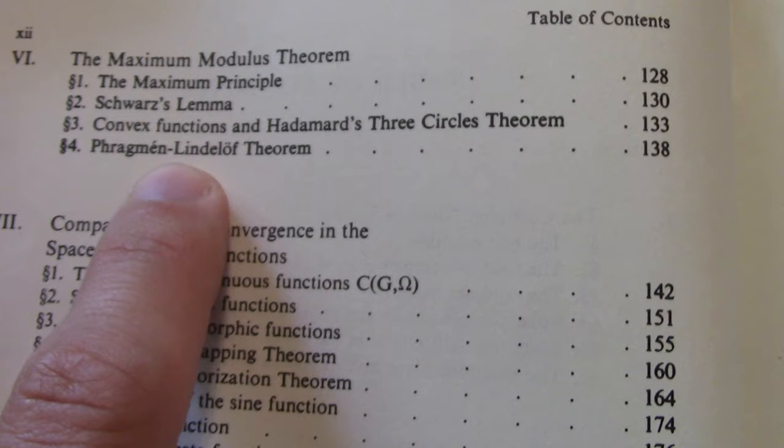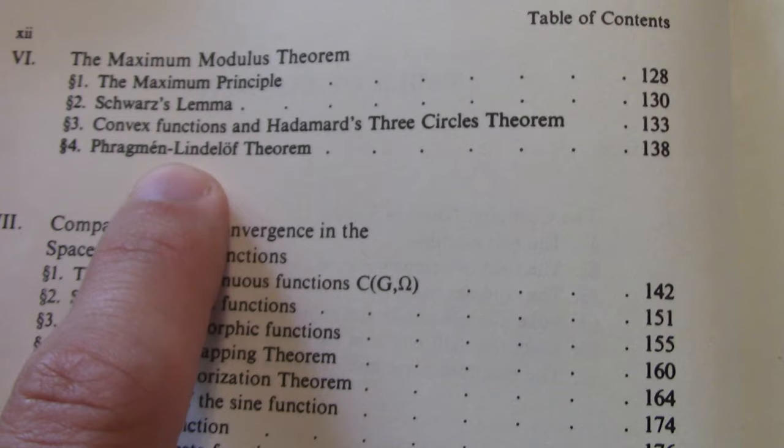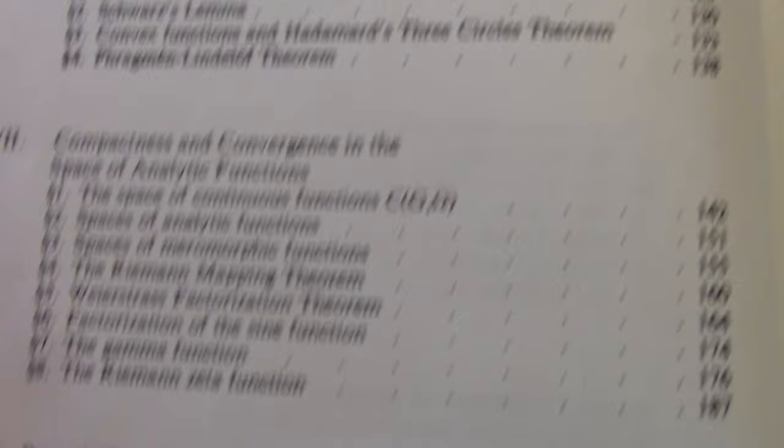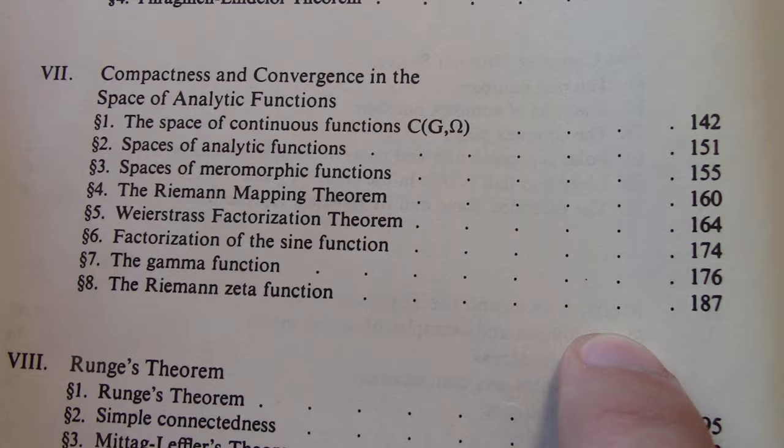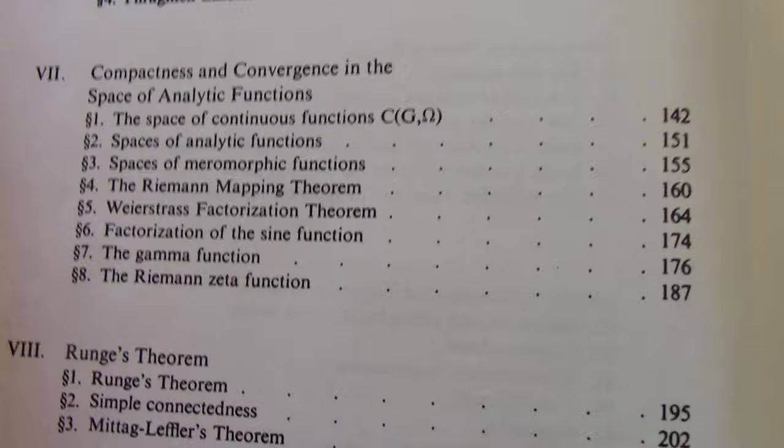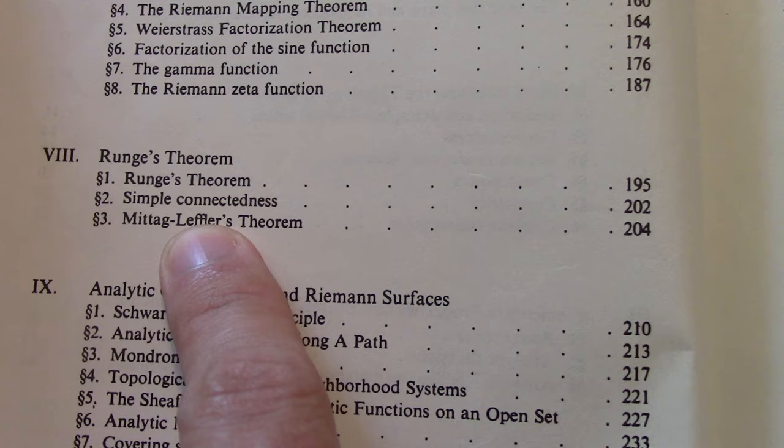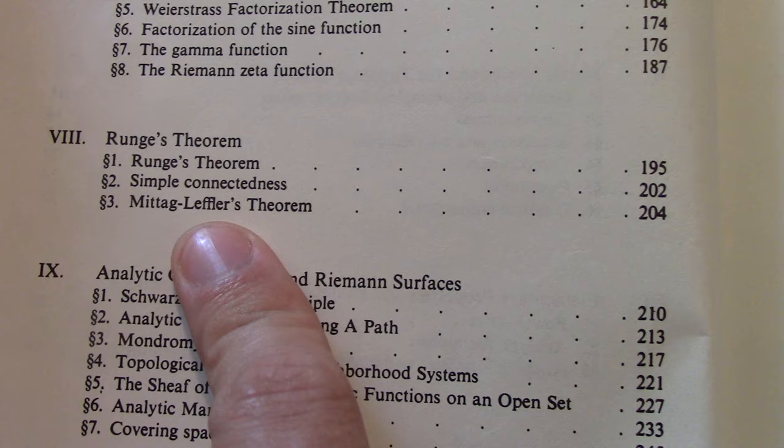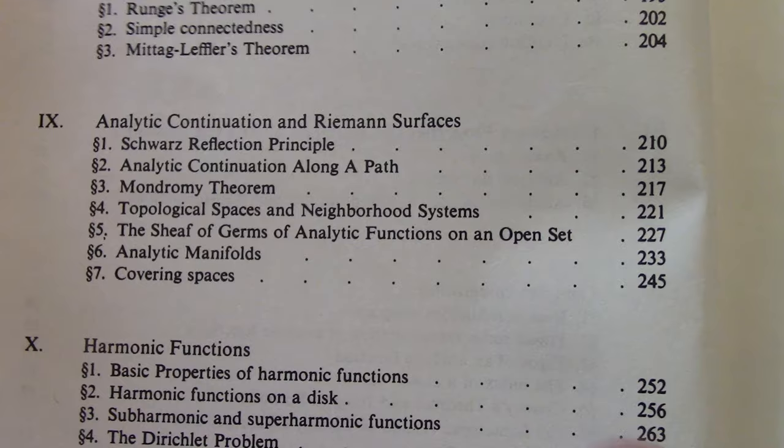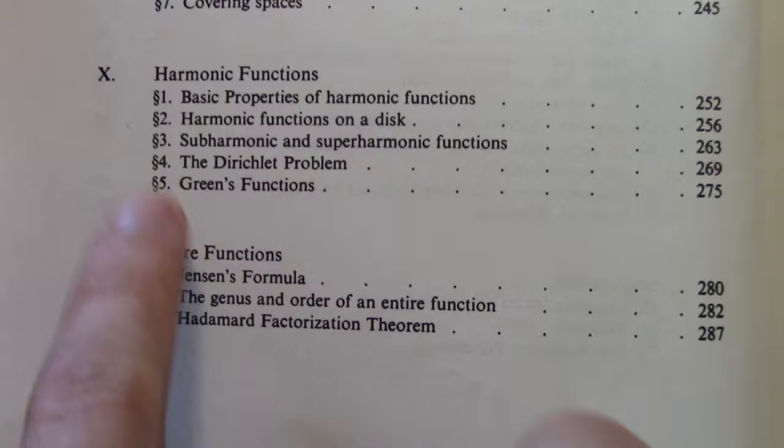Then we go on to the second half of the book. We start with stuff like the maximum principle, which actually would be covered in a typical course as well. But then we get on to compactness and different kinds of convergence. It's nice you get to do some analysis with the Riemann zeta function, gamma function. Riemann mapping theorem is a classic. I don't remember doing this chapter on Runge's theorem. Must have covered it.